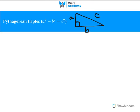The Pythagorean triples are numbers of the form ABC such that A squared plus B squared is equal to C squared.